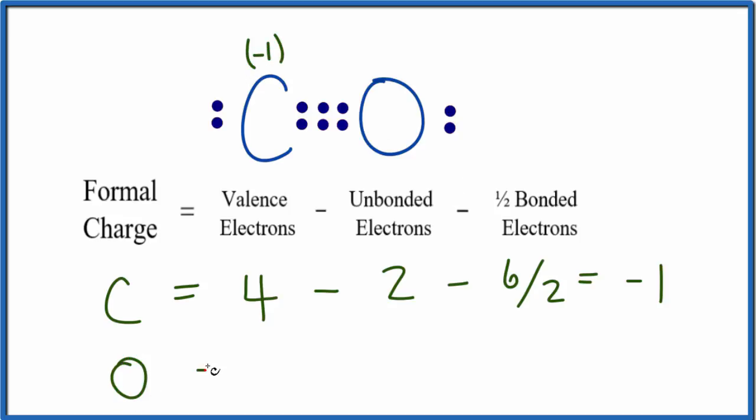For the oxygen, we will have six valence electrons. Subtract the unbonded electrons, two, and then we're going to subtract one half of the bonded valence electrons, which is two, four, six. So six over two.